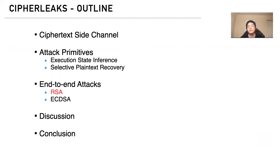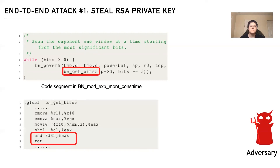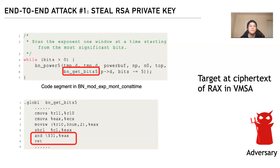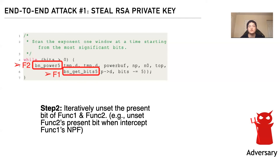I will now show two end-to-end attacks. The first attack is stealing an RSA private key from a SEV-enabled VM, targeting the libssl OpenSSL library. Specifically, we target a function called bn_get_bits_5 inside bn_mod_exp_constant_time. The function bn_get_bits_5 extracts 5 bits from the private key each iteration and puts the result in RAX before returning. The adversary targets the ciphertext of RAX and uses the following steps: first, they use execution state inference to locate the guest physical addresses of two key functions — bn_get_bits_5 and bn_mod_pow_5.